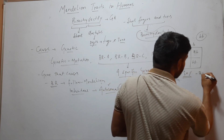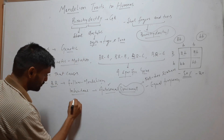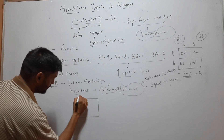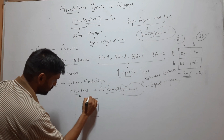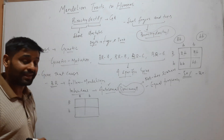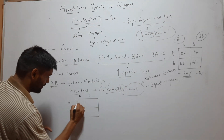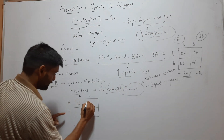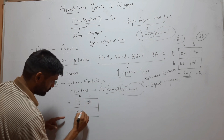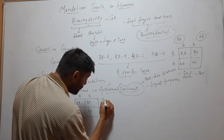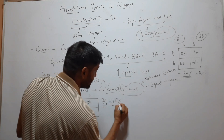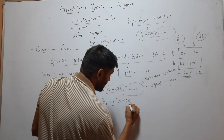If both parents are affected with Brachydactyly and both are heterozygous — that means Bb × Bb — then the Punnett square gives BB, Bb, Bb, bb. Three out of four children will have Brachydactyly, so 75% of their children will be affected.